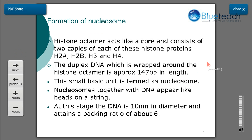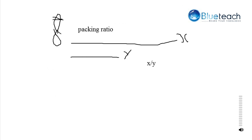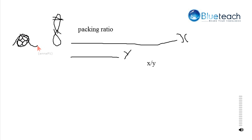The formation of the nucleosome is the very first level of organization. It is formed by wrapping of the DNA around the histone octamer. Octamer means 8 molecules — 8 molecules of histones combine together to form the histone octamer and act like a core. The DNA gets wrapped around this octamer, making one full turn and then three-fourths of another turn around the histone octamer, forming a nucleosome.